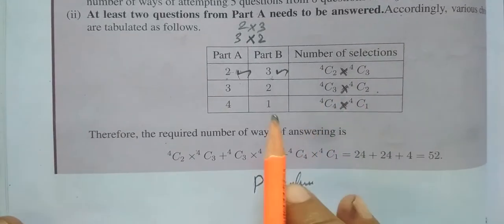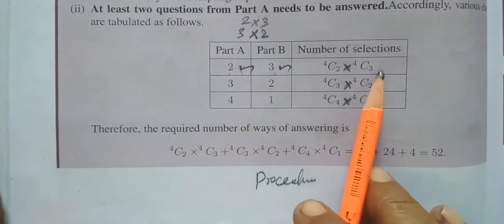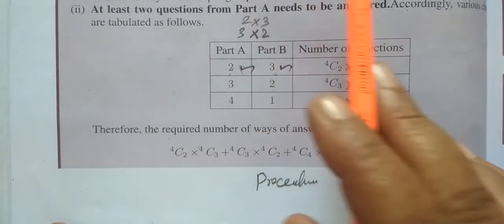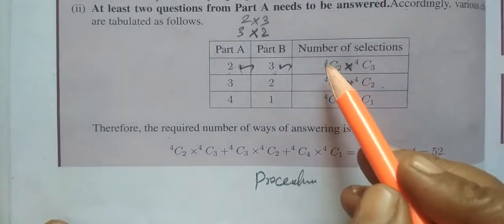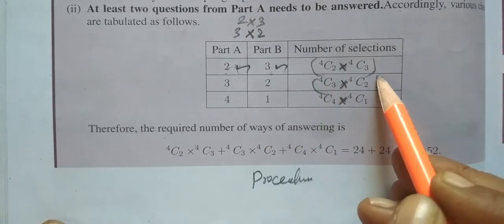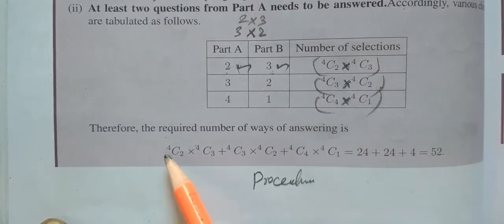So you are selecting 2, then after that 3. This is the total. This is plus this, plus this. This is the answer.